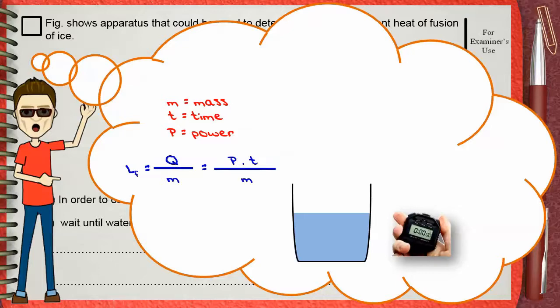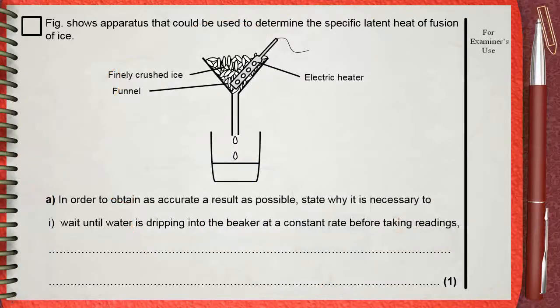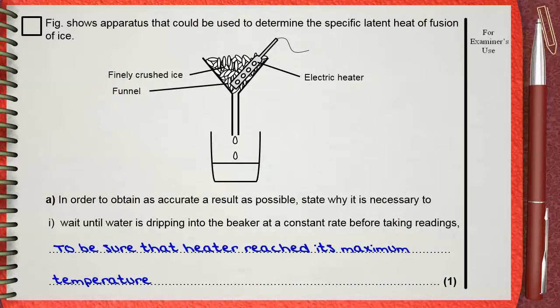Why do we wait until water is dripping into the beaker at a constant rate before taking readings? To be sure that heater reached its maximum temperature. The heater does not reach its maximum temperature immediately; it needs some time. You cannot start your stopwatch once the heater is on.